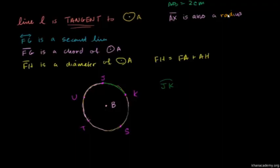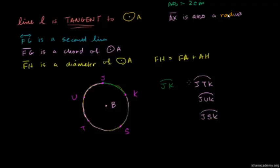Going the long way around, we would call that the major arc. Normally when you specify a major arc, just to show that you're going the long way around — not the shortest way to get between J and K — you'll often specify another point that you're going through. For example, this major arc we could specify as J, T, K — we started at J, went through T, and then went all the way to K. This could also be written as J, U, K or J, S, K. There are multiple ways to specify this major arc. The minor arc is the shortest distance and the major arc is the longer distance around.